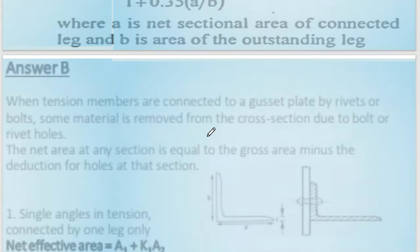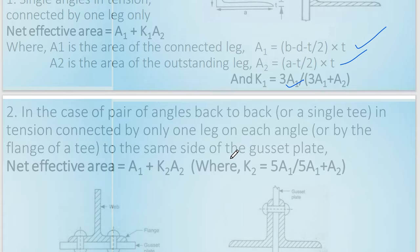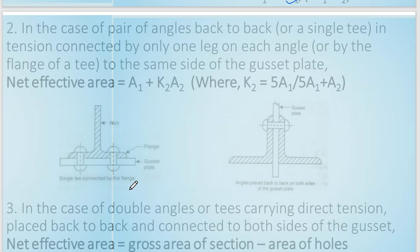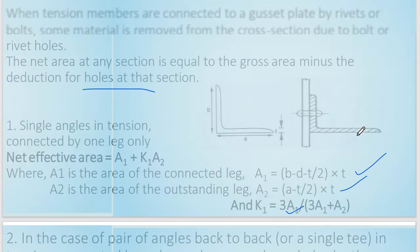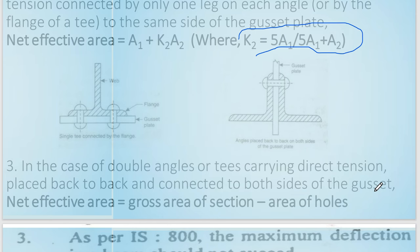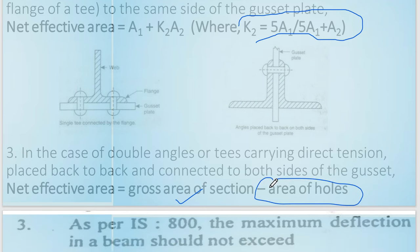For a double angle — two angles placed back-to-back — the connection is similar but uses coefficient K2, where K2 equals 5A1 divided by (5A1 plus A2). In the case of double angles or T-sections carrying direct tension, placed back-to-back and connected on both sides of the gusset plate, the net effective area equals gross area minus the hole area deduction.